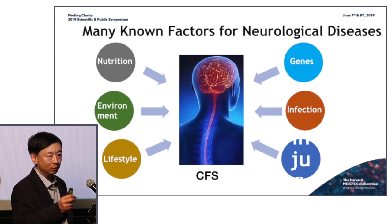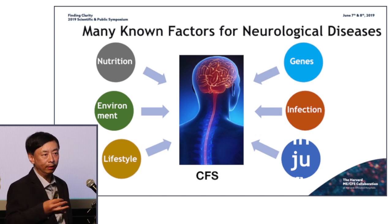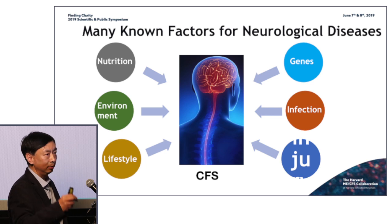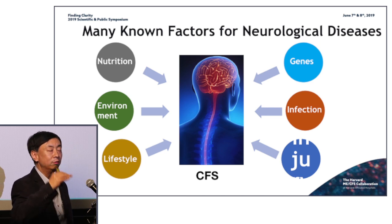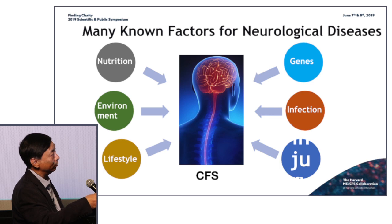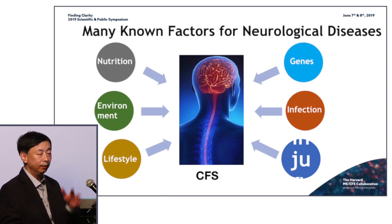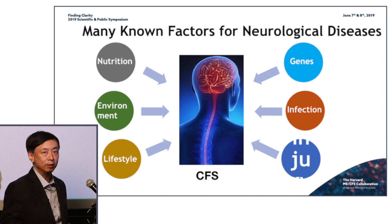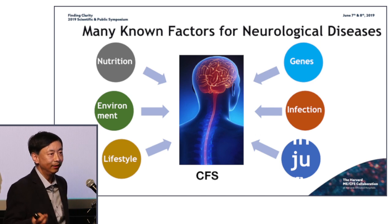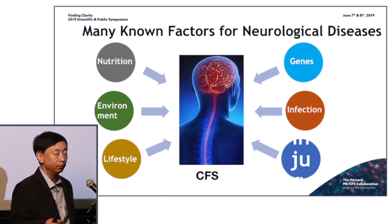Therefore, the findings from each individual study need to be compared so you can find a rigorous signal. And data collected from different levels — for example, measuring genes versus measuring infections — needs to be integrated so we can find something called a chain of evidence that could potentially lead us to the cause of the disease.